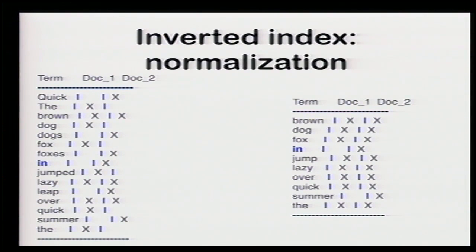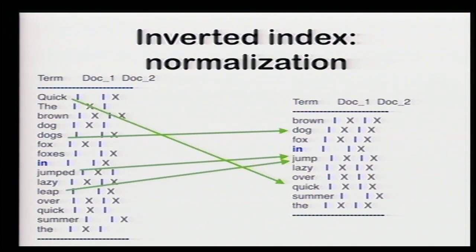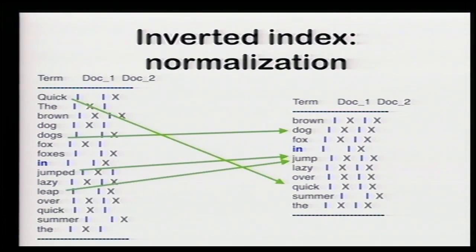You can find there's a little bit of redundancy in my index. That's why we should apply normalization — it means we should lowercase words like 'quick', pluralize documents, use root forms of verbs, etc., and maybe use synonyms like 'jump' and 'leap'.